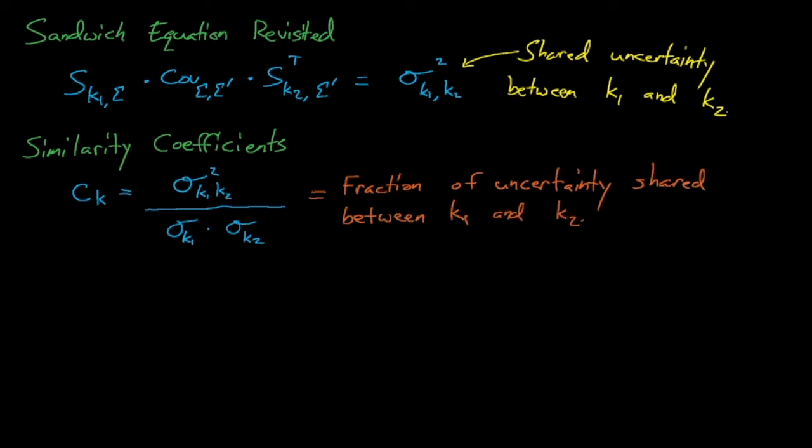If systems have more materials in common and are sensitive to cross-section uncertainty at the same neutron energies, then they will have higher c-sub-k similarity coefficients. In contrast, a uranium-fueled system is not likely to be similar to a plutonium system, nor is a fast system likely to share the same sources of uncertainty as a thermal spectrum system.